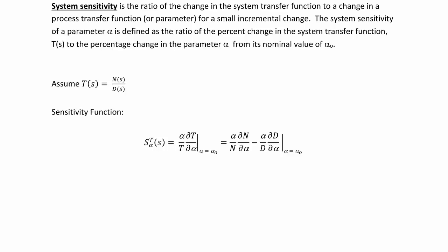Assume that T(s) is equal to the numerator N(s) over the denominator D(s). Then the sensitivity function S of T with respect to alpha equals alpha over T, times the partial derivative of T with respect to alpha, evaluated at alpha equal to alpha naught. Alternately, you can write the function as alpha over the numerator times the partial derivative of N with respect to alpha, minus alpha over the denominator times the partial derivative of D with respect to alpha, evaluated at alpha equal to alpha naught.